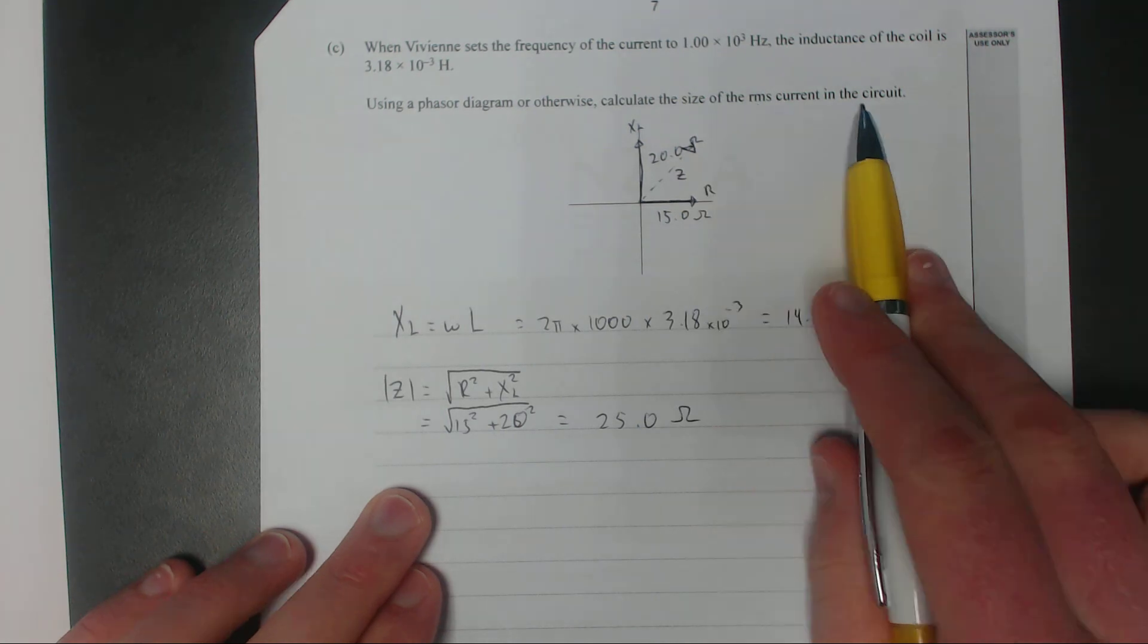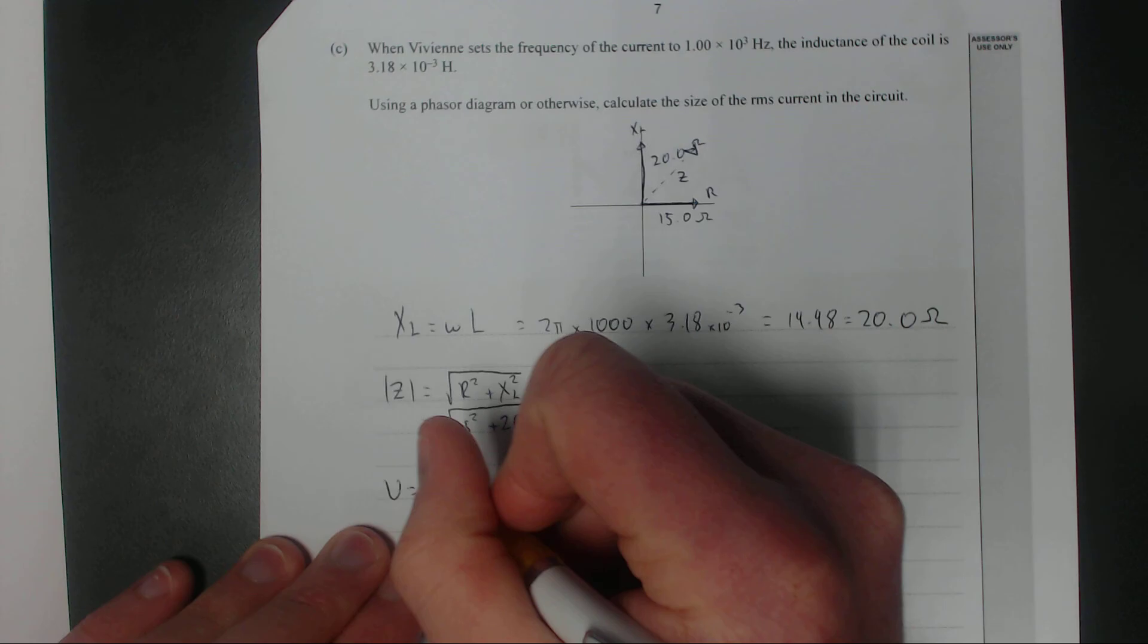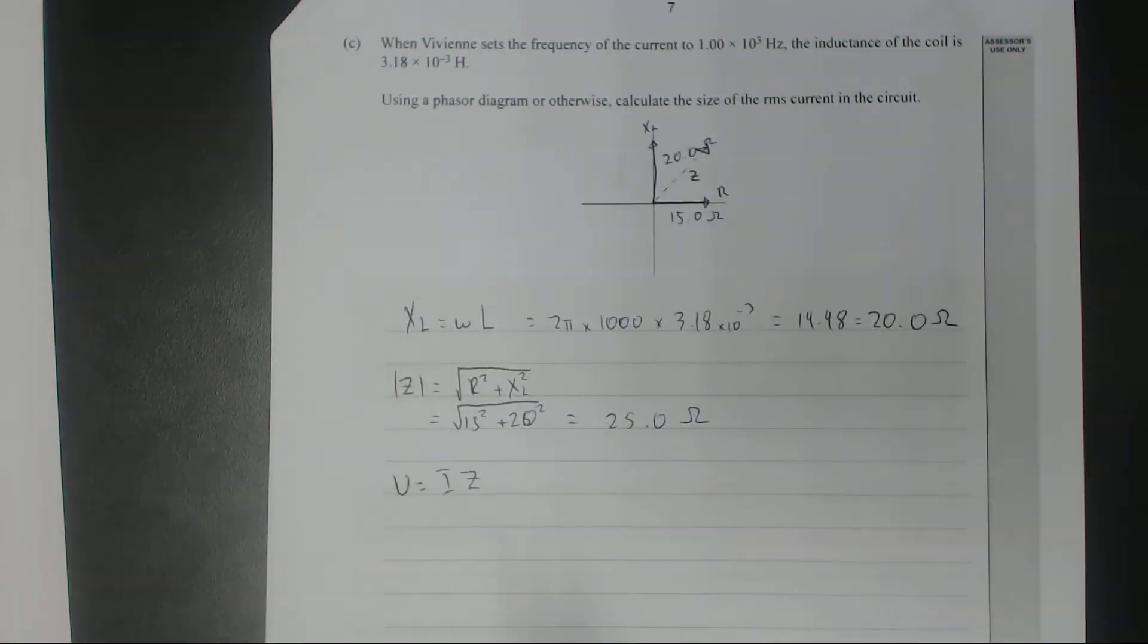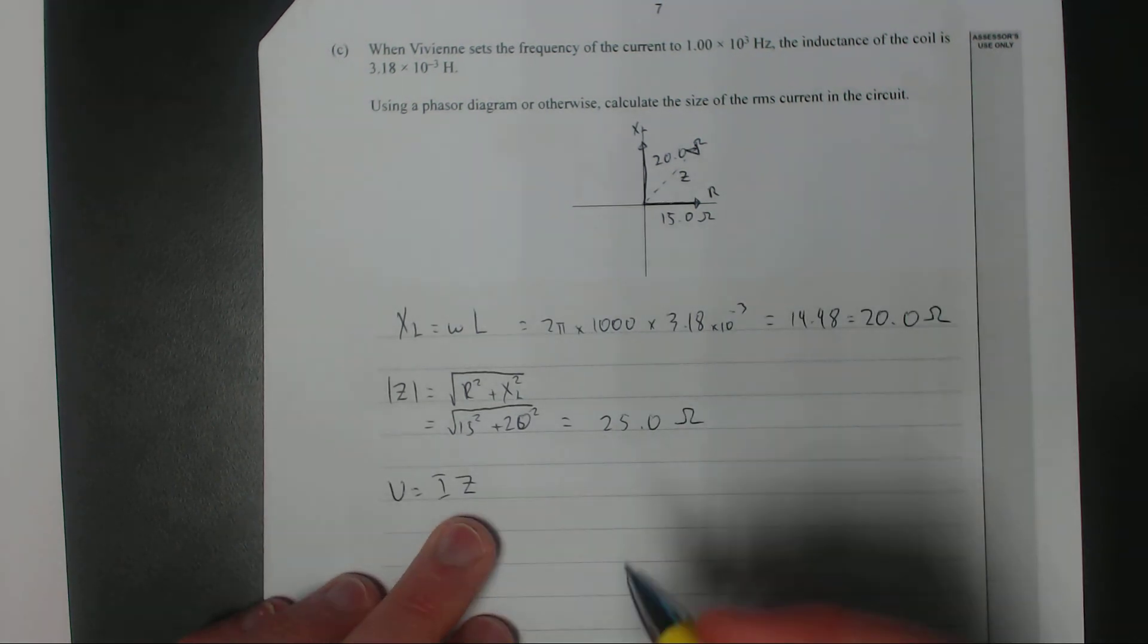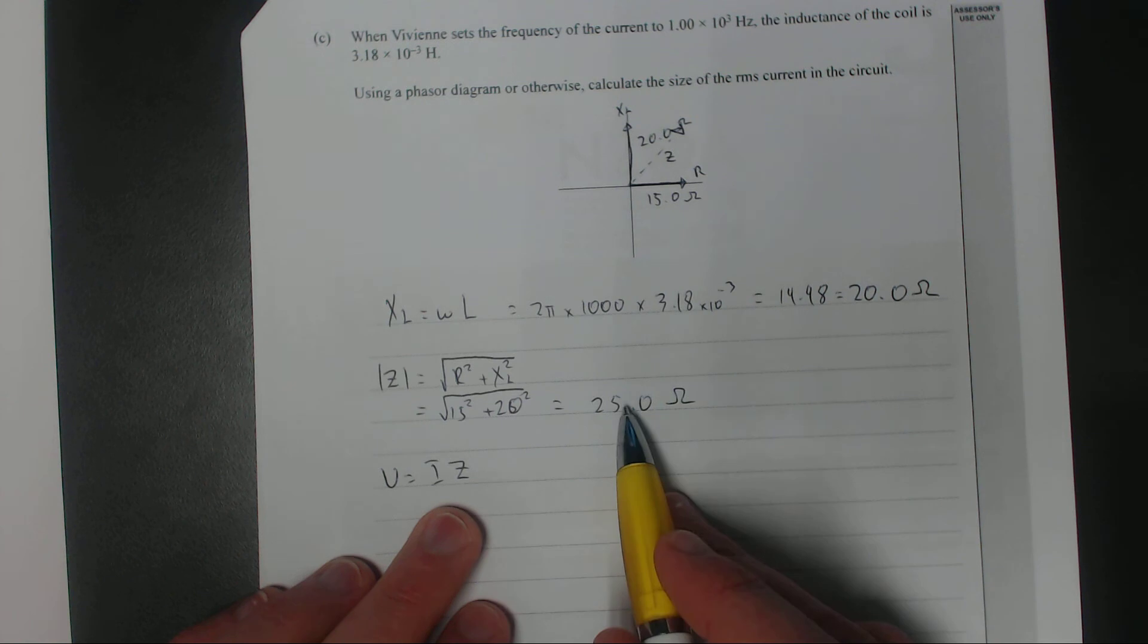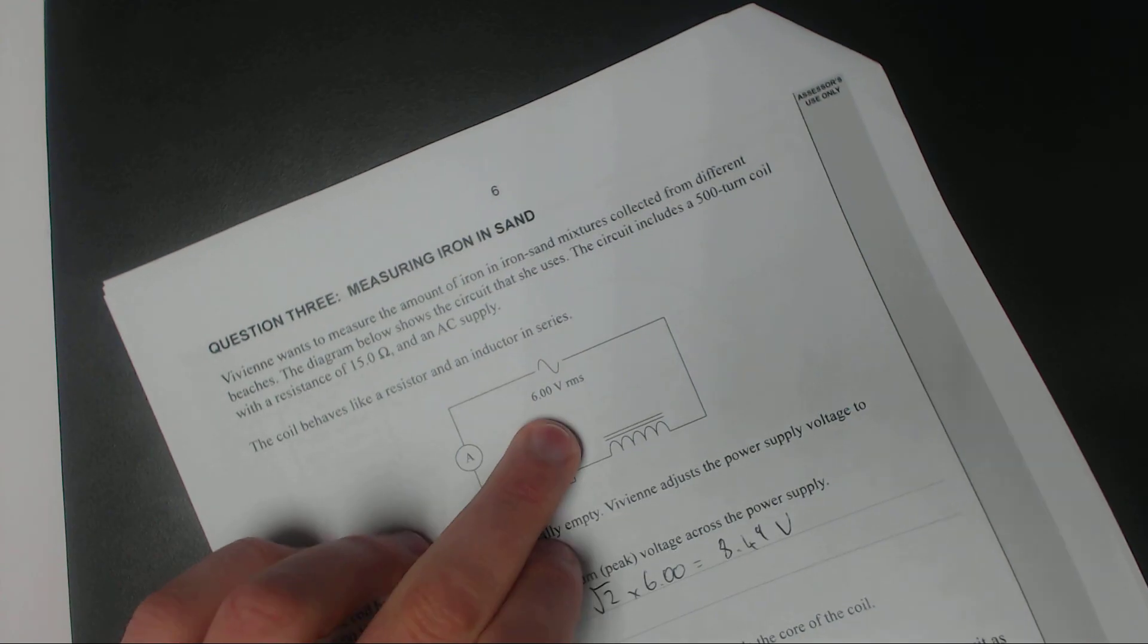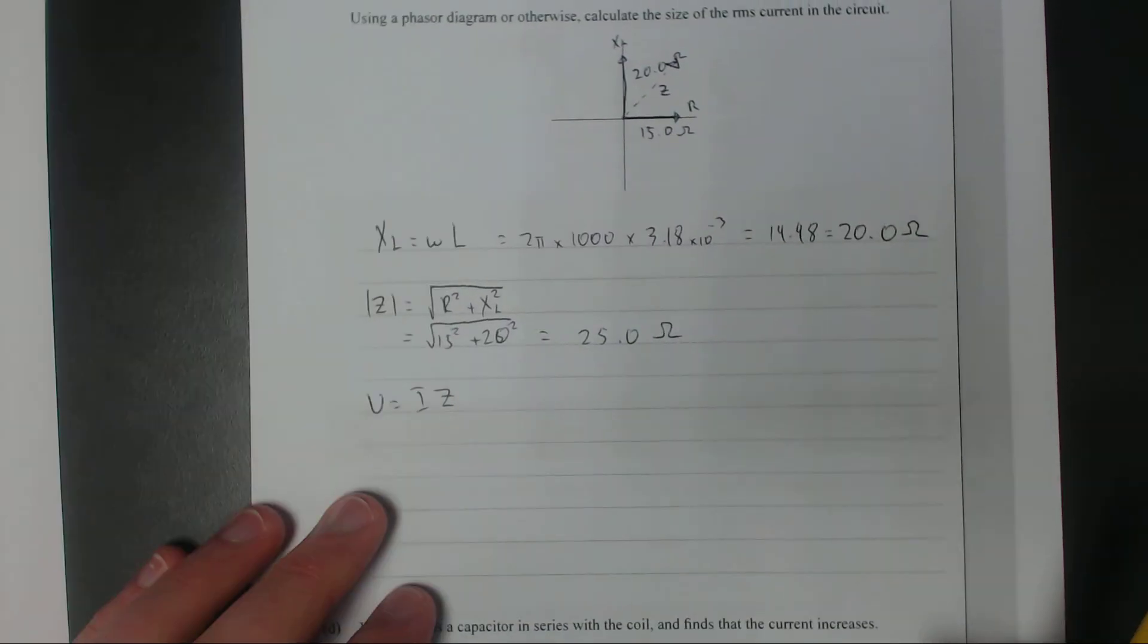What I actually want to find out is the RMS current in the circuit. V equals IR or IZ. Impedance and resistance - one's just a fancy version of the other. So I have the impedance and I have the voltage. You always use RMS for basically everything to do with AC unless stated. Unless you're trying to work out the maximum energy at some point in time, always use RMS.